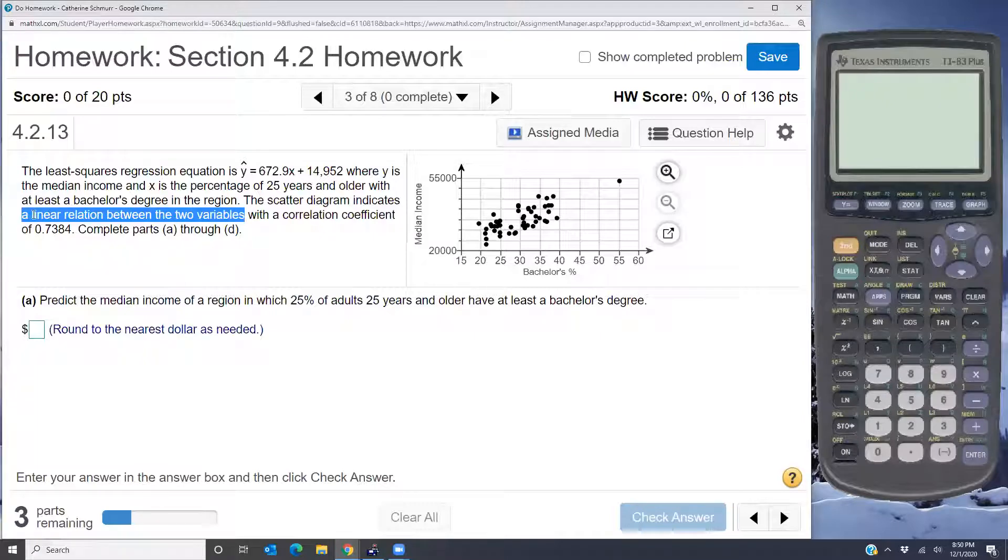So what that tells us, that linear relation is indicated, is that we can use y hat to make predictions about what we're looking at, median income. So we can use y hat to make predictions about median income.